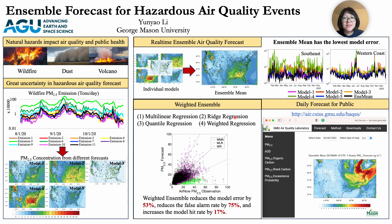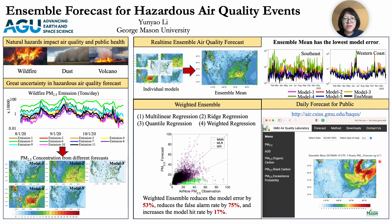The ensemble forecast balances the systematic error of the individual models. Here is a daily forecast error from the five individual models and the ensemble mean — the ensemble mean has the lowest model error. I also developed several methods to create the weighted ensemble which can further reduce the model error. I tried multilinear regression, quantile regression, and weighted regression. The weighted ensemble reduced the model error by 50 percent, reduced the false alarm ratio by 75 percent, and increased the model hit ratio.